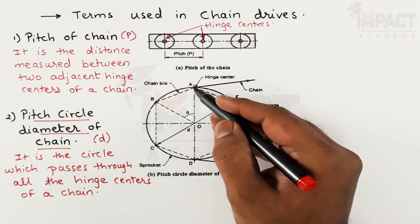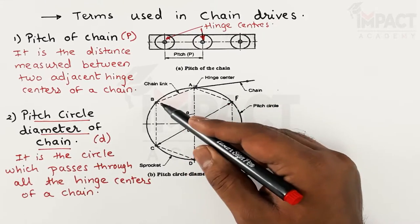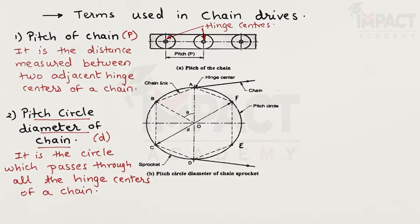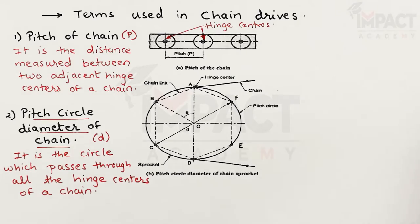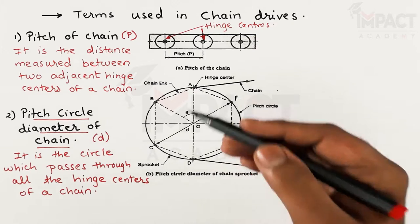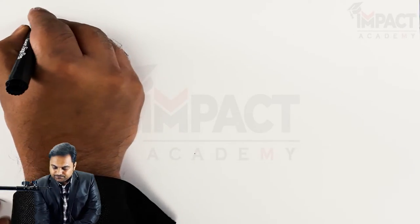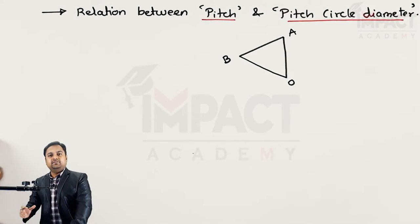When the chain is mounted onto the sprocket, A indicates one hinge center and B is another hinge center, and both subtend an angle theta at the center of the sprocket. We will now derive the relation between the pitch circle diameter and the pitch of the chain using triangle AOB, which is drawn separately. This relation will be useful for solving derivations and problems in the further part of this chapter.